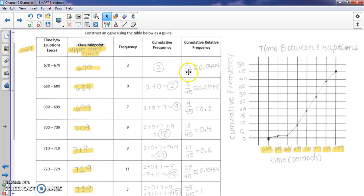Instead of the relative frequency column adding, sorry, instead of cumulative relative frequency column adding to 1, the last value is going to be 1. Whereas the relative frequency column added to 1. So you can see the similarities between cumulative frequency, cumulative relative frequency, and just the regular frequency and relative frequency. So a little bit different there.